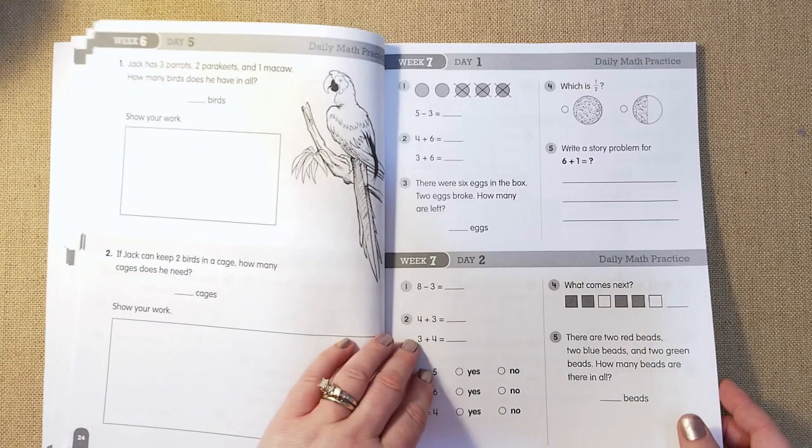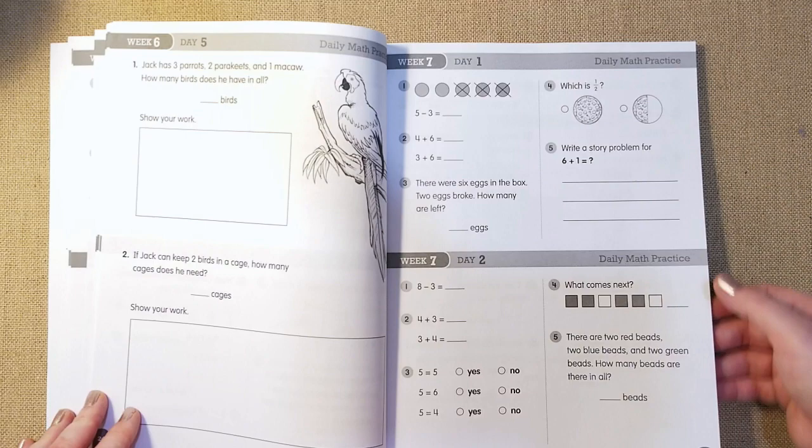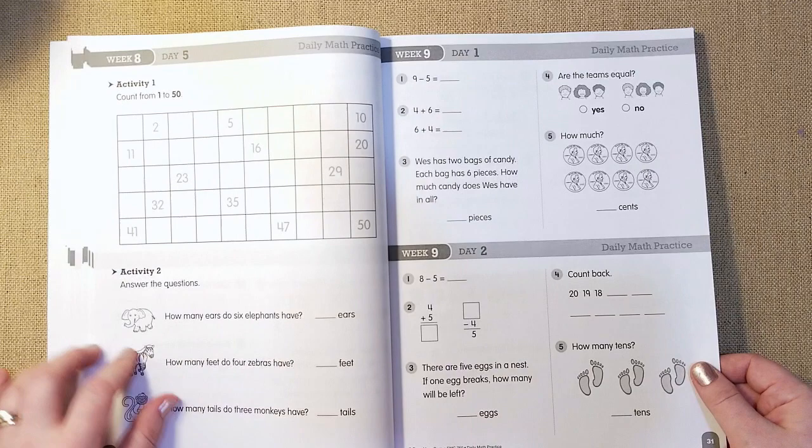I really love that they have them in almost each daily work page. And they're starting to do fractions. So which one is half? So she has to bubble in that one. And write a story, problem four, six plus. On the fifth day, they have these charts. So count from one to 50.